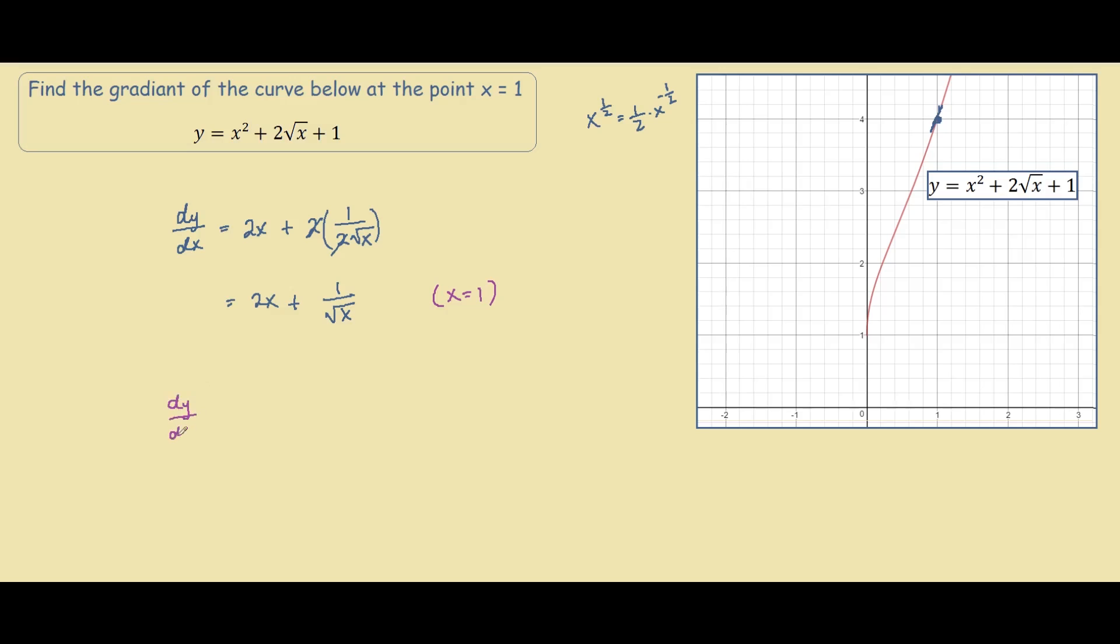So dy/dx(1) = 2(1) + 1/√1. 2 times 1 is 2, plus 1 divided by √1 is 1. So it equals 3.